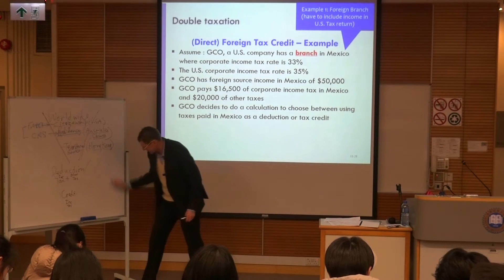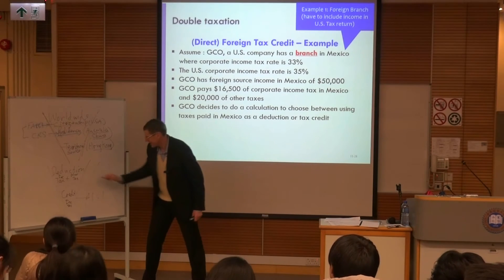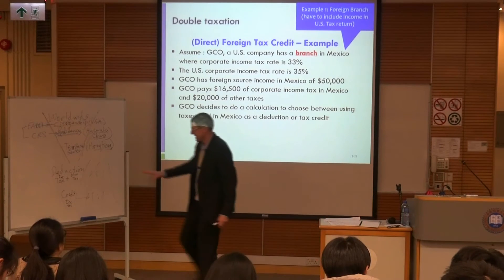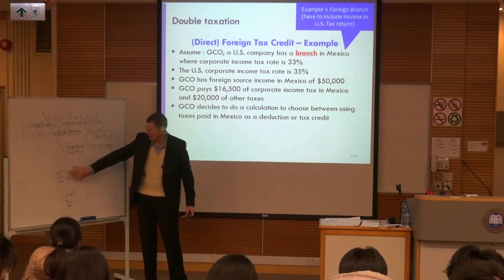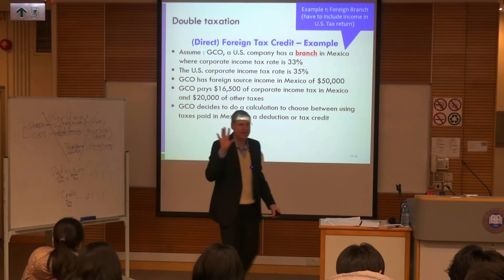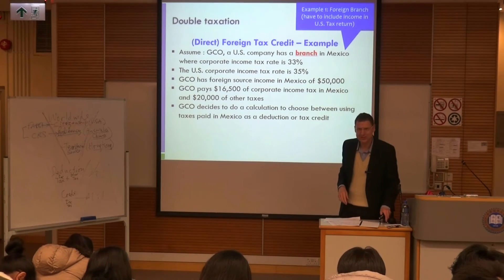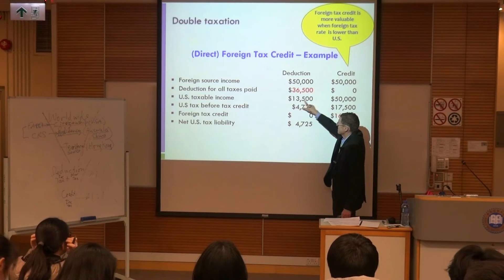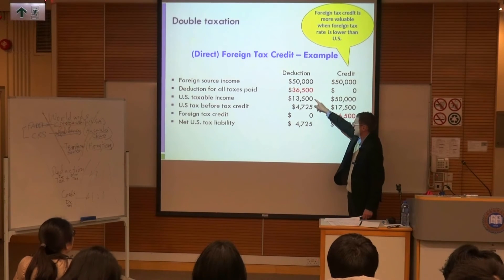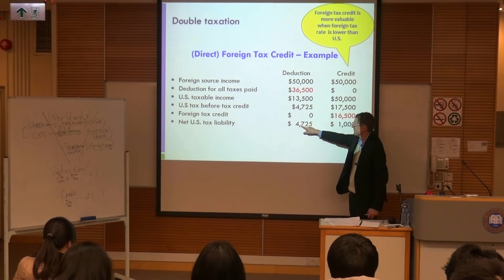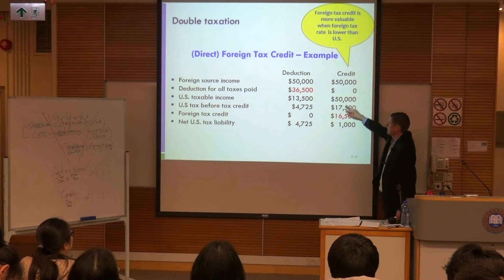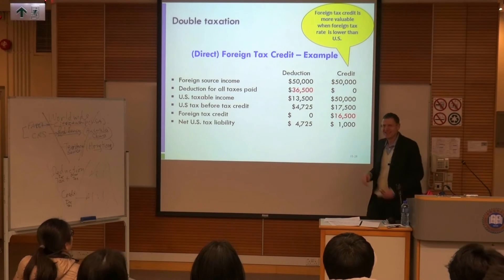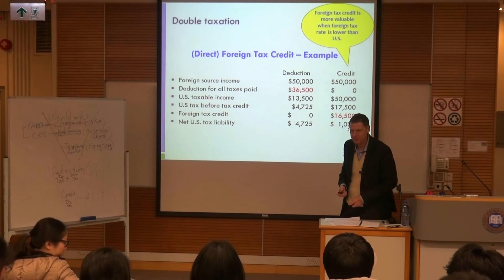With the deduction approach, you catch a bigger net — income tax plus other taxes — but you don't get dollar-for-dollar credit; it just reduces your taxable income, so the remainder still gets taxed. With the credit approach, you pay tax on the full $50,000 at 35% and then get the $16,500 back one-to-one, ending up paying only $1,000. The foreign tax credit is very, very popular.